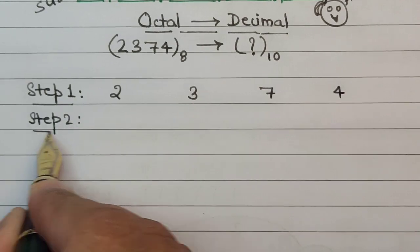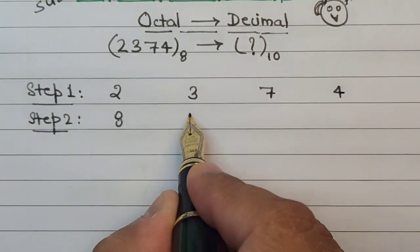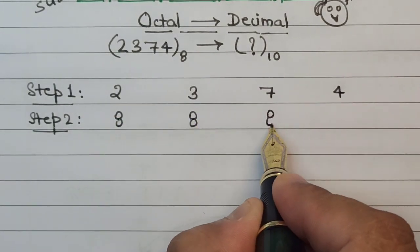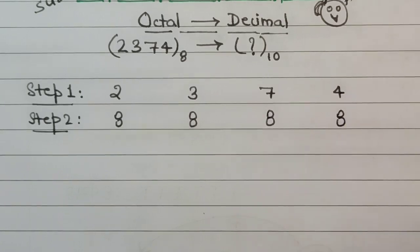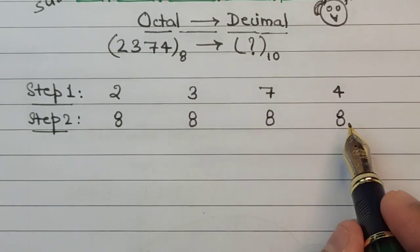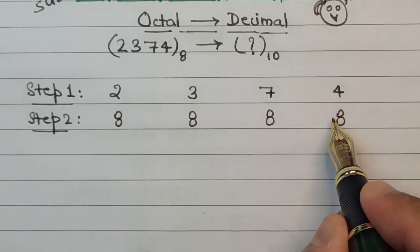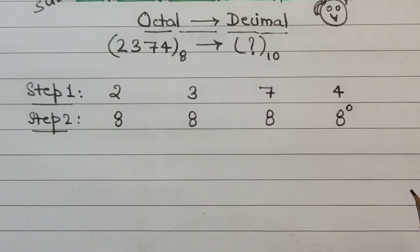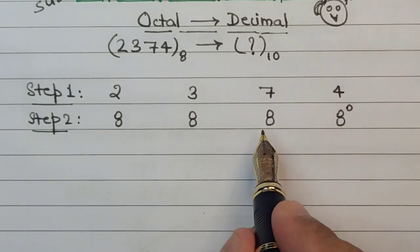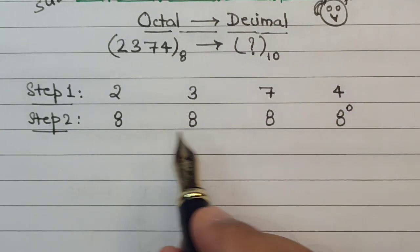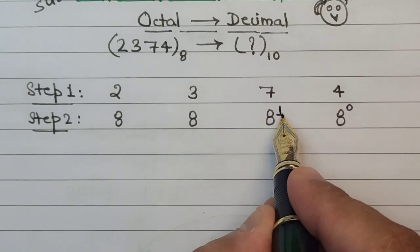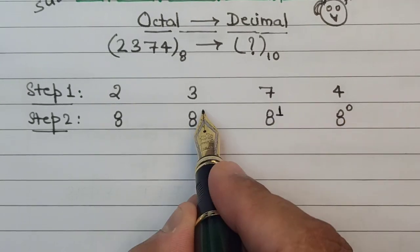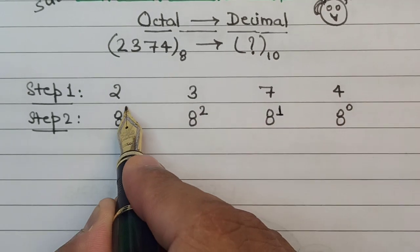Now in the next part of the solution, what we do is we focus on the right hand side, the rightmost 8, and we raise this to the power zero. Subsequently, as we move towards left, we increase the power by one, so after zero we have one, then we have two, and then we have three.